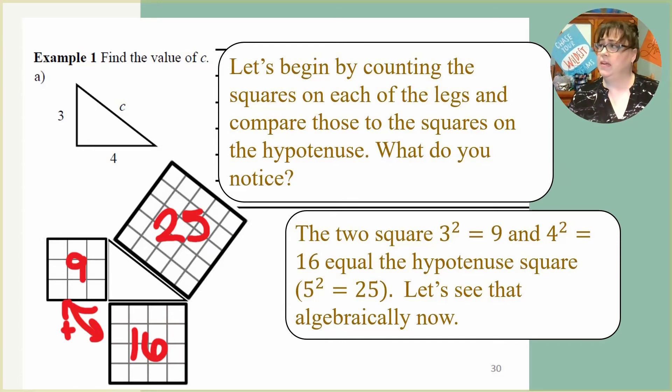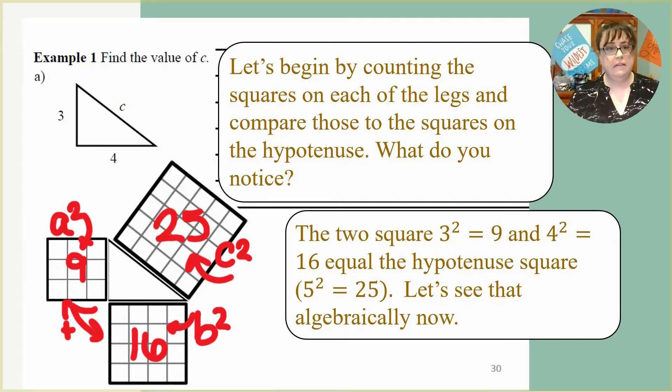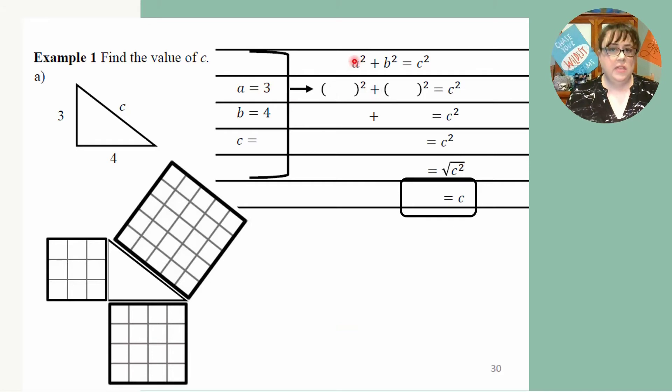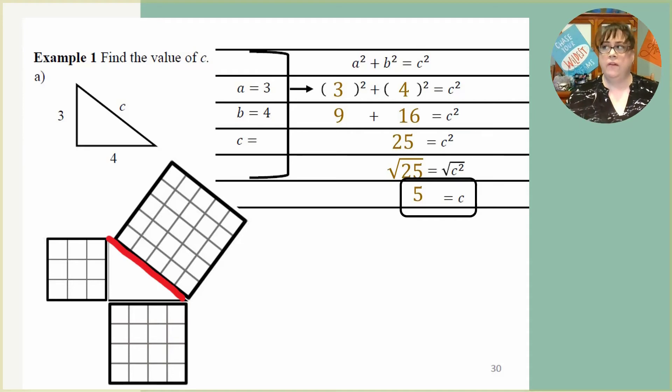So now let's see how this works algebraically. If you go back to what we said, which was a squared plus b squared equals c squared, we can see this in a nice picture. So algebraically, a is three. So let's substitute that in. B is four. So we're going to substitute that one in. And now three squared and four squared. Well, three squared is nine and four squared is 16. And nine plus 16 is 25. So how do we undo a square? With a square root. So we're going to square root both sides. And the square root of 25 is five. So we now know that the length of C is five.